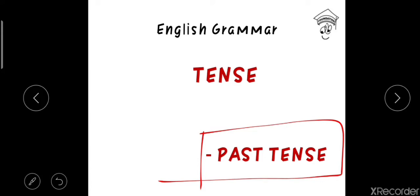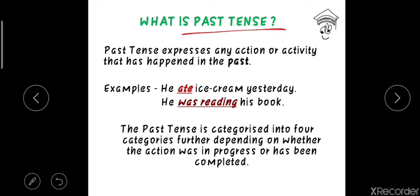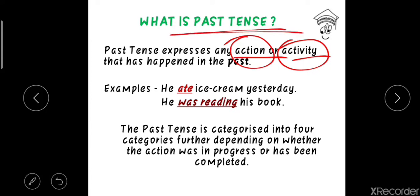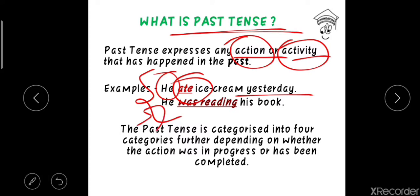Let's start the class with the question: what is past tense? Past tense expresses any action or activity that has happened in the past — any kind of action, event, fact, or program that either has been completed in the past or was in progress in the past. For example, 'He ate ice cream yesterday' — the action is completed. 'He was reading his book' — the action was in progress at some point in the past.